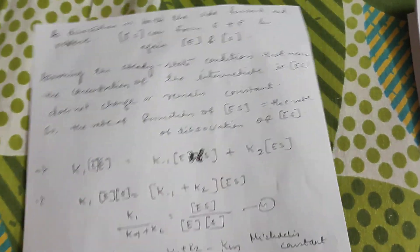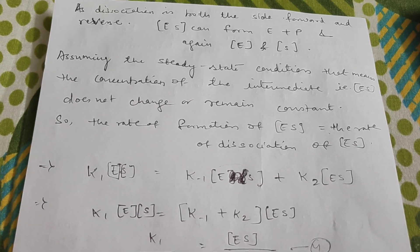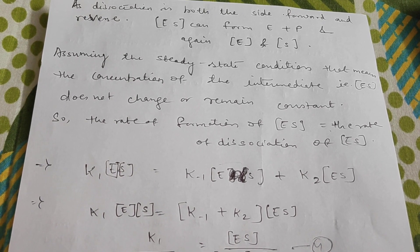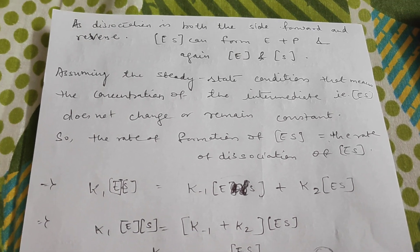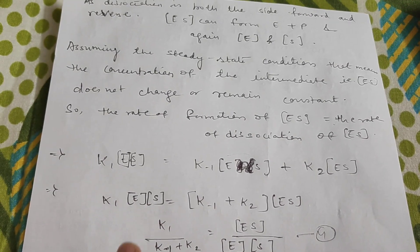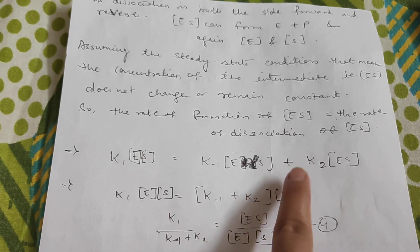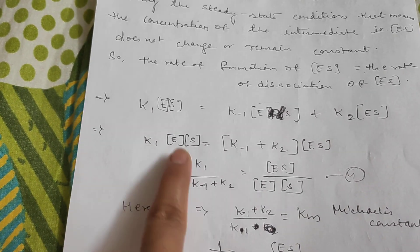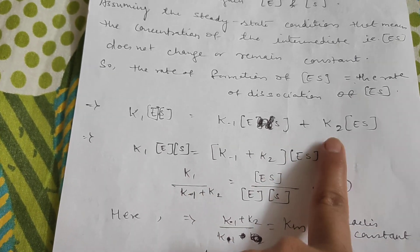Now we assume a steady-state condition. Steady state means an equilibrium condition at which the concentration of ES does not change — it remains constant. This occurs when the rate of formation equals the rate of dissociation of ES, as given by Briggs and Haldane. Therefore we equate: K1·[E]·[S] = K-1·[ES] + K2·[ES], which gives K1·[E]·[S] = [ES]·(K-1 + K2).